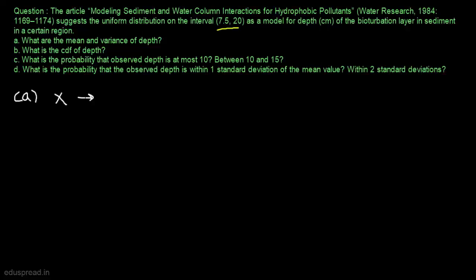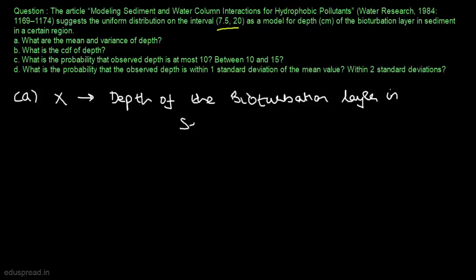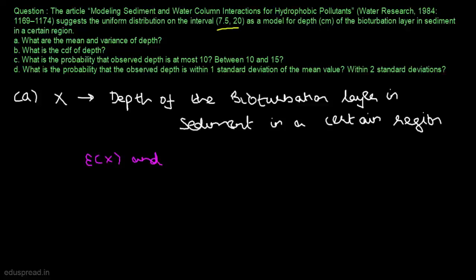Let X denote the depth of the bioturbation layer in sediment in a certain region. We have to find the expected value of X and the variance of X. Before we could find those, we have to find the probability density function of X. We know that X is uniformly distributed over the interval 7.5 to 20.